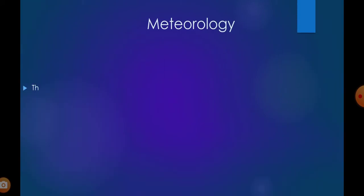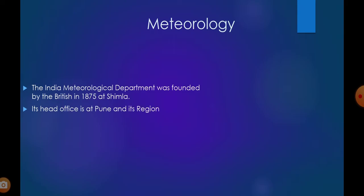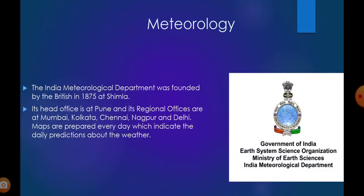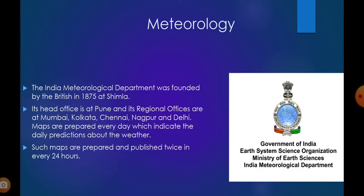The Indian Meteorological Department was founded by the British in 1875 at Shimla. The head office is at Pune, and its regional offices are at Mumbai, Kolkata, Chennai, Nagpur, and Delhi. Maps are prepared daily indicating weather predictions. You must have seen the daily temperatures for major metros — Delhi, Mumbai, Kolkata, Chennai — reported on TV news. This is the logo of the Indian Meteorological Department. Such maps are prepared and published twice every 24 hours.